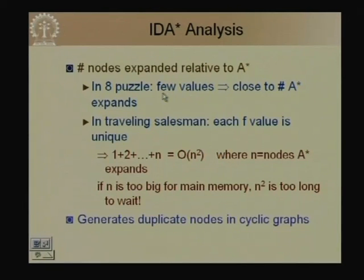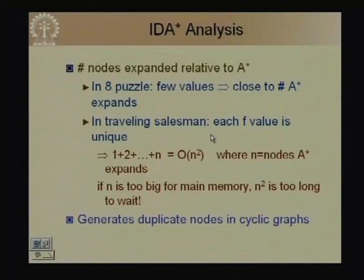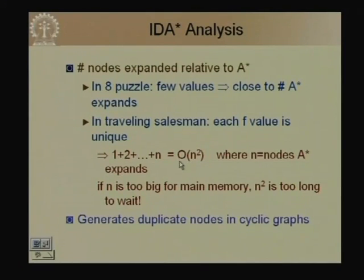IDA* expands somewhat more nodes than A* but usually of the same order. If there are many distinct F-values (e.g., real-valued path costs as in TSP), IDA* can expand O(n^2) nodes compared to A*. When few distinct F-values exist (e.g., the 8-puzzle with integer values), IDA* is quite efficient. However, IDA* does not easily detect previously expanded nodes, making it less suitable for graph search where loops are common.